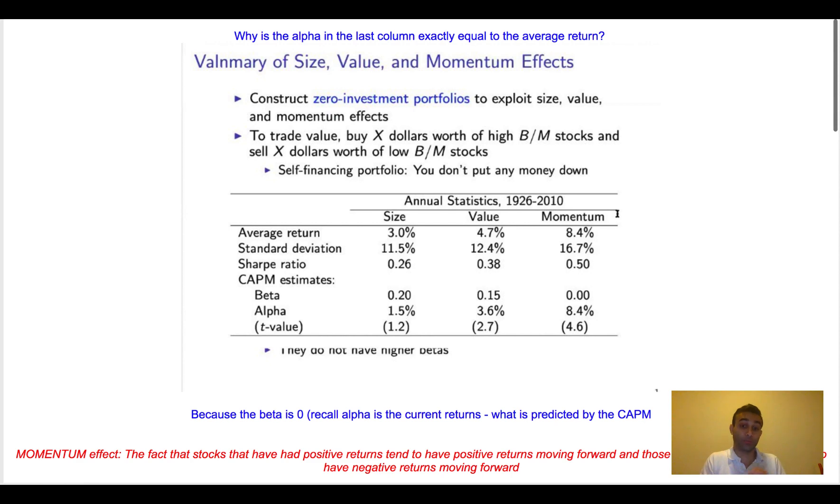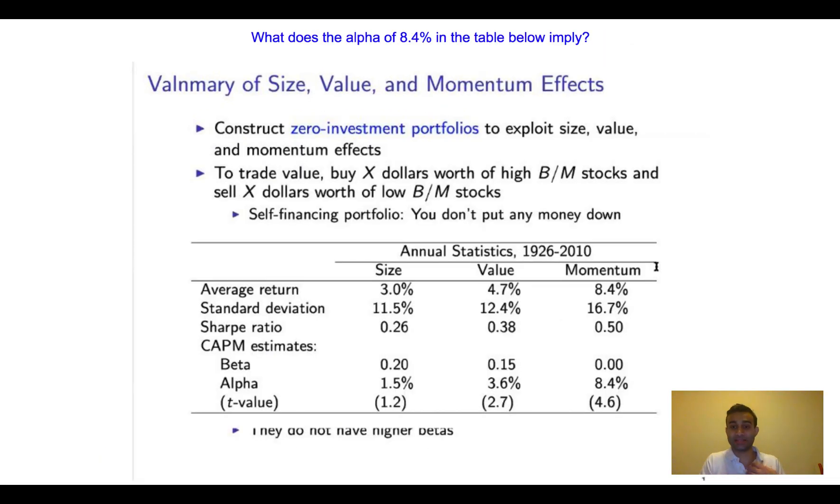So I can do one more example with you guys. Notice that I'm asking a conceptual question here. I'm saying, what does the 8.4% in the table below imply? What does the alpha value imply? And again, I have to think to myself, what does alpha mean?